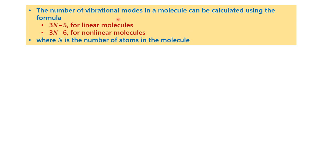Now let us see how we know how many vibrational modes are possible for a particular molecule. There is a set of formulas: for a linear molecule, 3N minus 5; for a non-linear molecule, 3N minus 6, where N is the number of atoms in the molecule. If we know the number of atoms and the geometry of the molecule, we can find out the number of vibrational modes. First we must find the number of possible vibrational modes, and after that we can determine which among them will be IR active or Raman active.